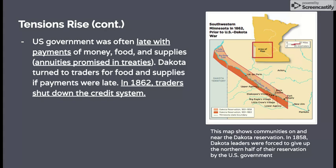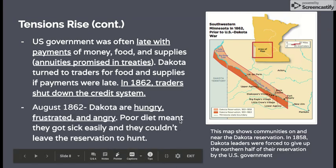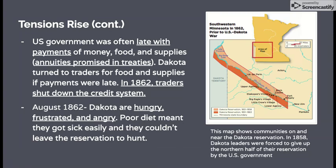In 1862, the traders shut down the credit system entirely — basically saying if you can't pay for it now, you don't get it. This left the Dakota in serious trouble because they didn't have the treaty payments they'd been promised and they were starving; they needed the food and supplies. By August of 1862, the Dakota were very hungry, very frustrated, and very angry. Because they weren't eating a regular healthy diet, their bodies couldn't fight off illness, they got sick easily, and they were no longer allowed to leave the reservation to hunt, so their resources were very limited.